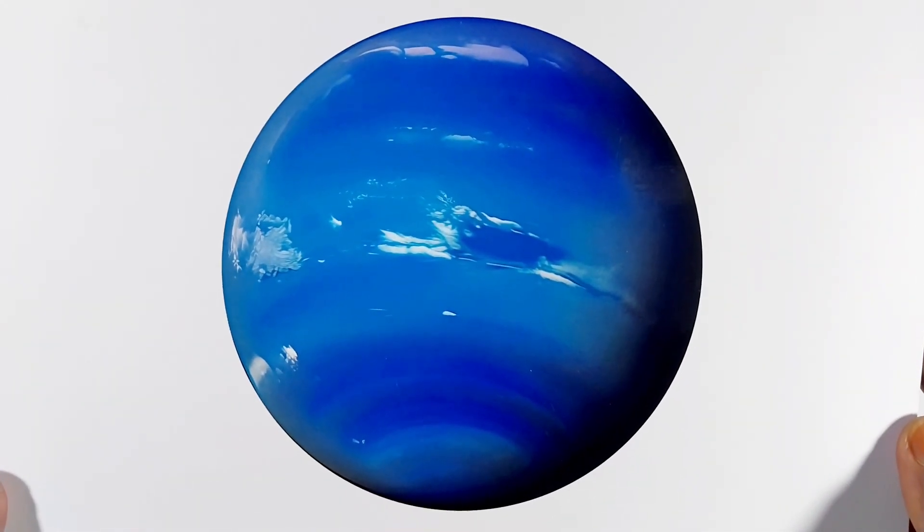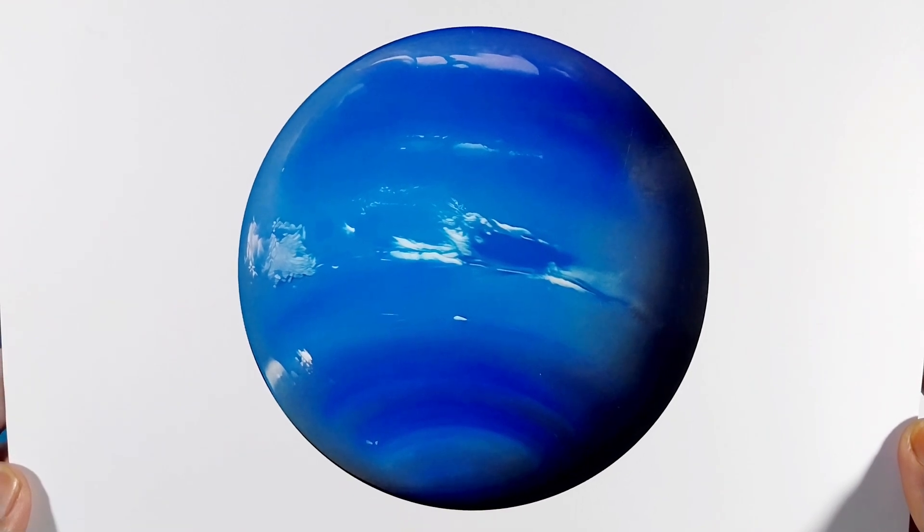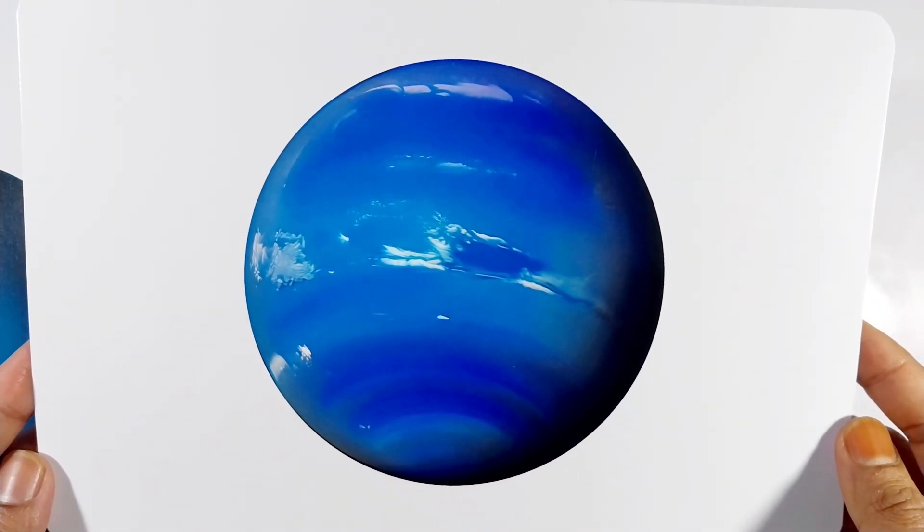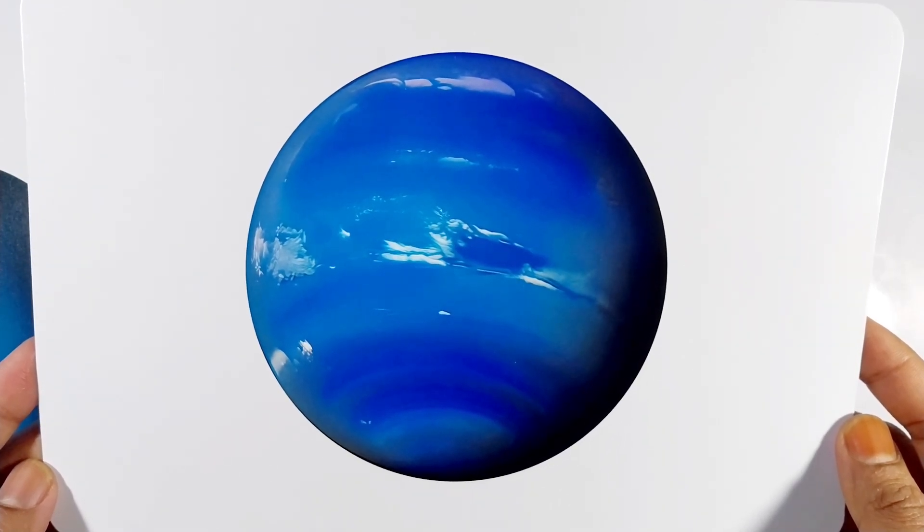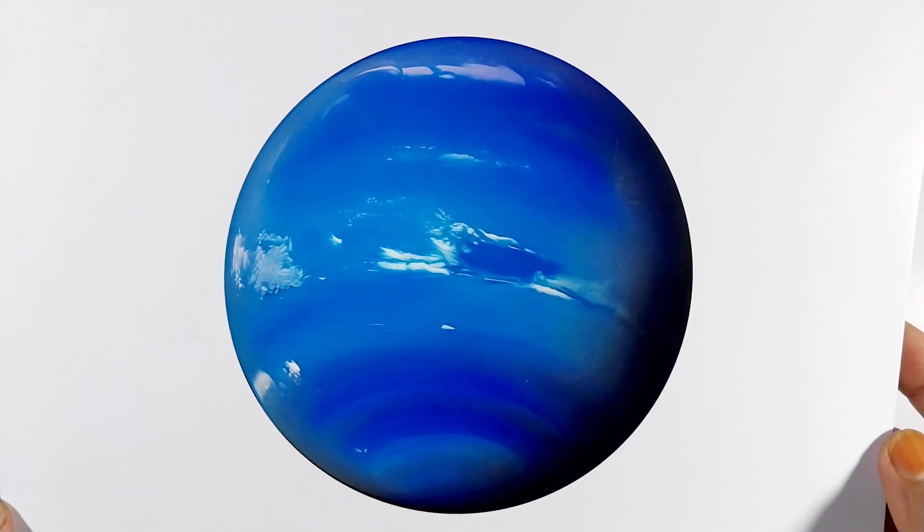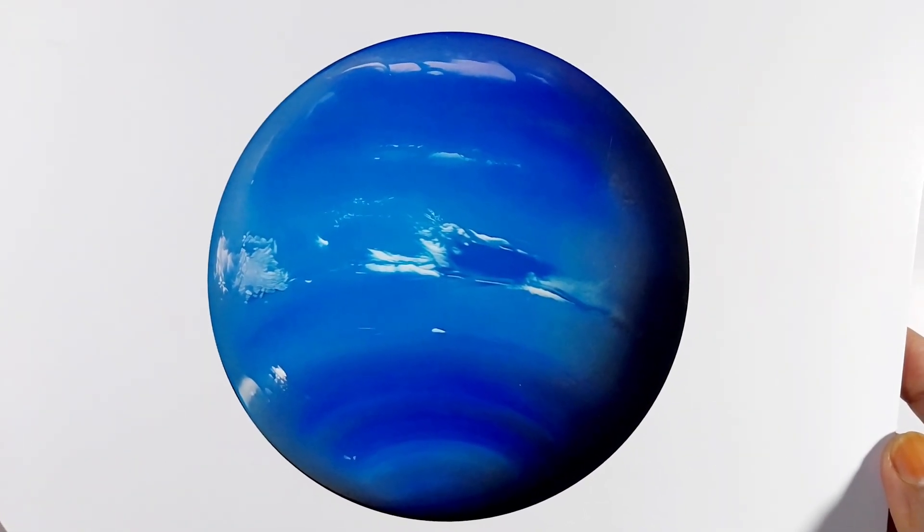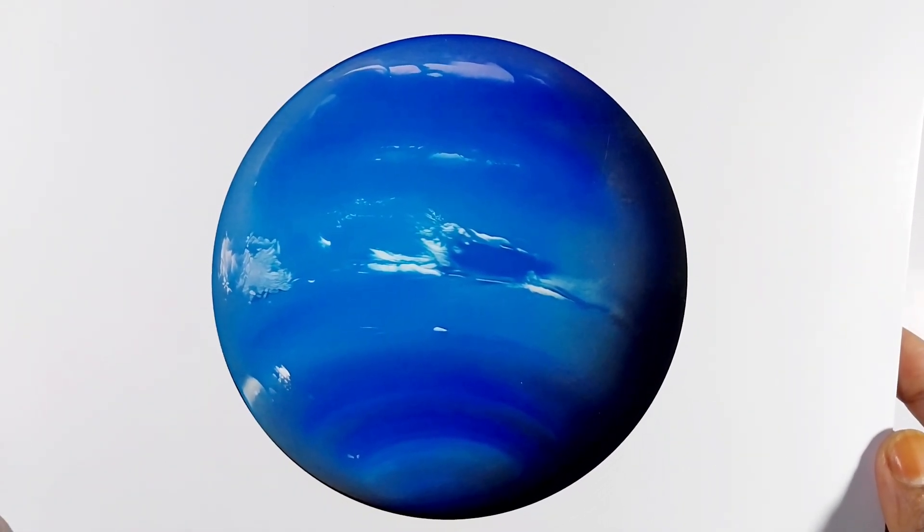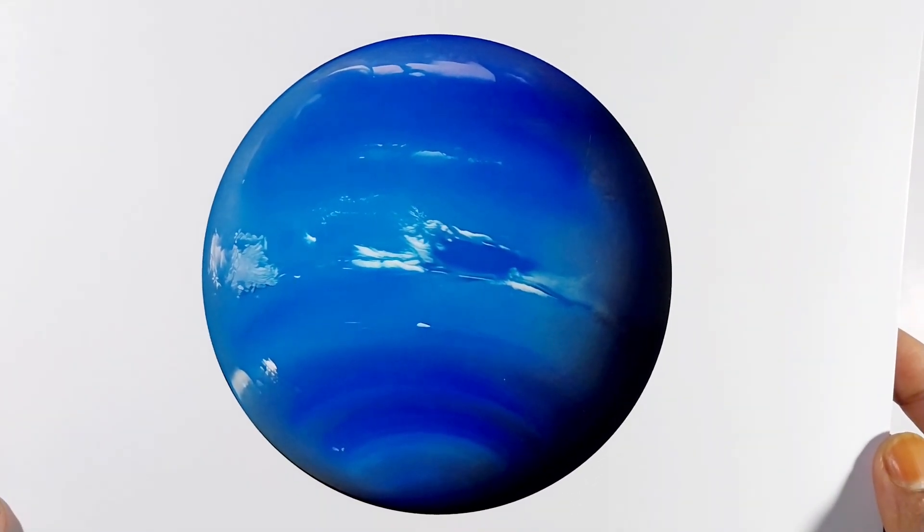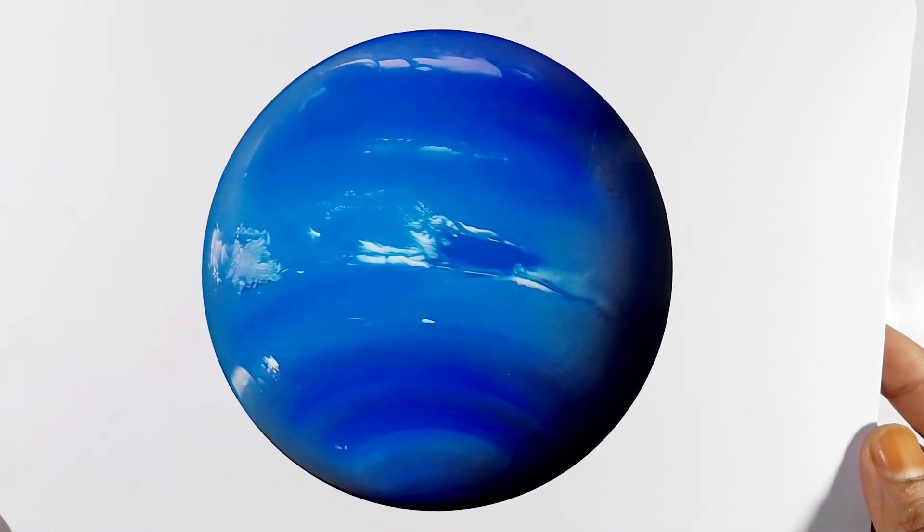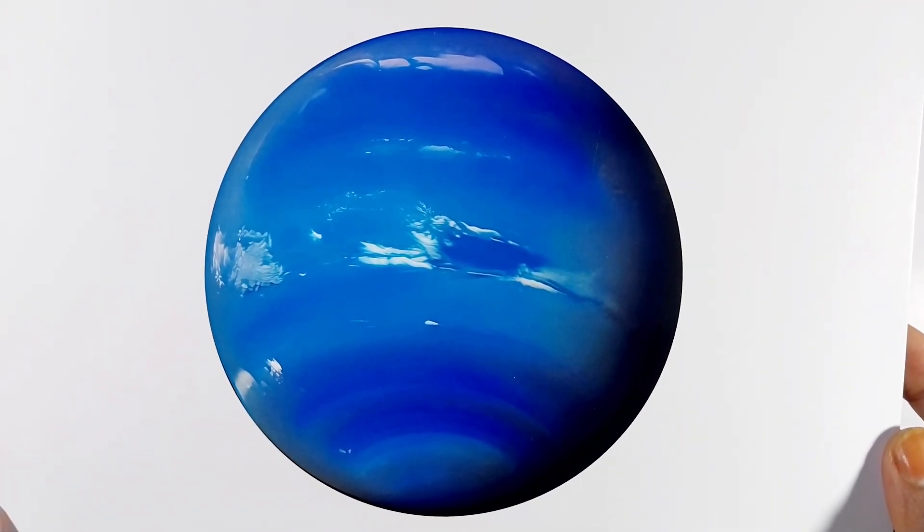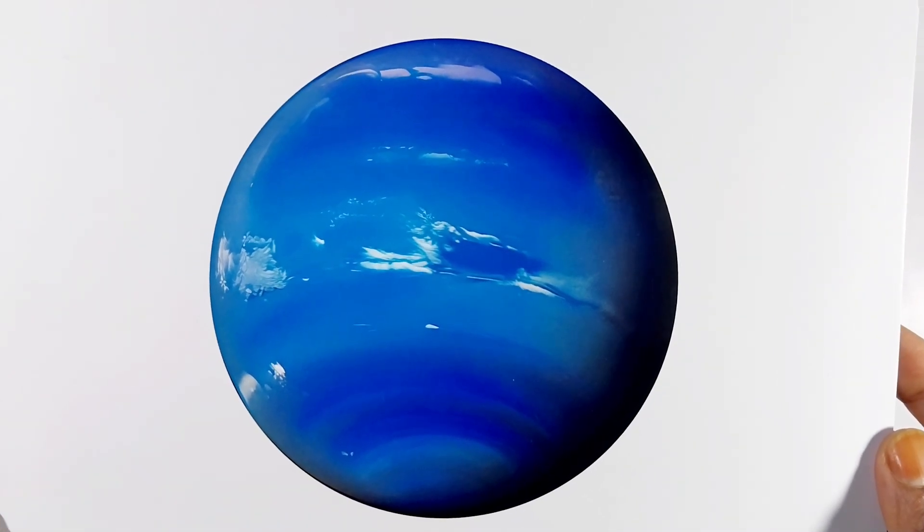Neptune is the eighth and farthest planet from the sun in our solar system, known for its vibrant blue color. It is a gas giant composed mostly of hydrogen, helium, and traces of methane, which give it its distinctive blue hue. Neptune has a series of dark storms in its atmosphere, including the great dark spot, similar to Jupiter's great red spot.